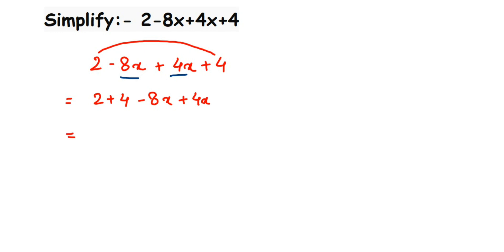So again here, 2 and 4 are constants. We're going to add up, so 2 + 4 is 6. And next we have -8x + 4x, and they are like terms and they have different signs.